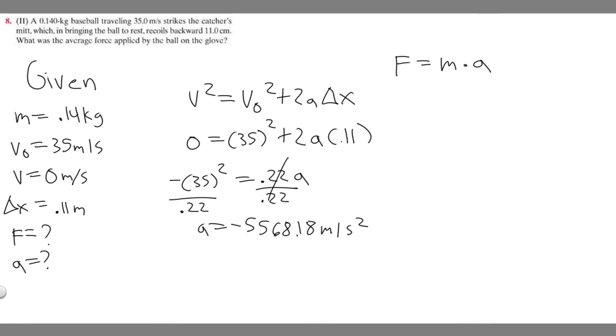Keep in mind your acceleration units have to be meters per second squared and your mass has to be in kg. Luckily in this case they both line up so we don't have to change anything. The mass is 0.14.